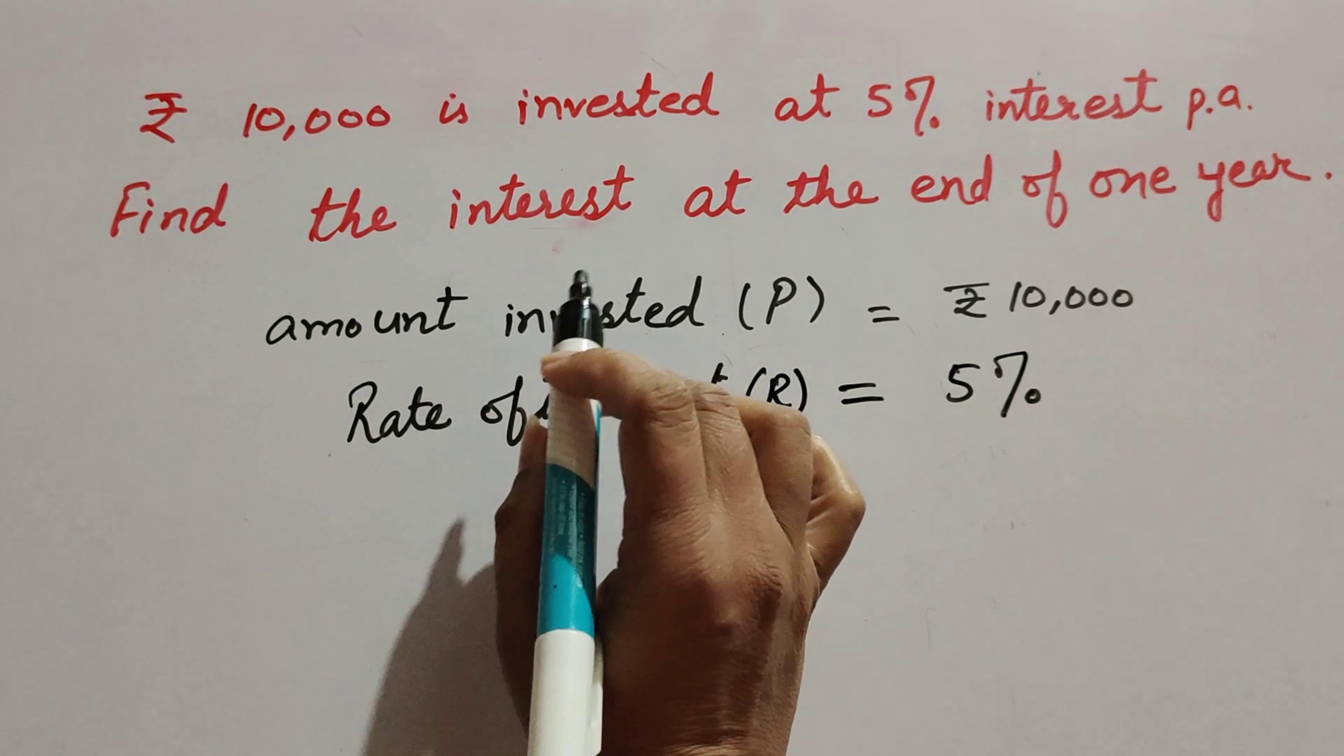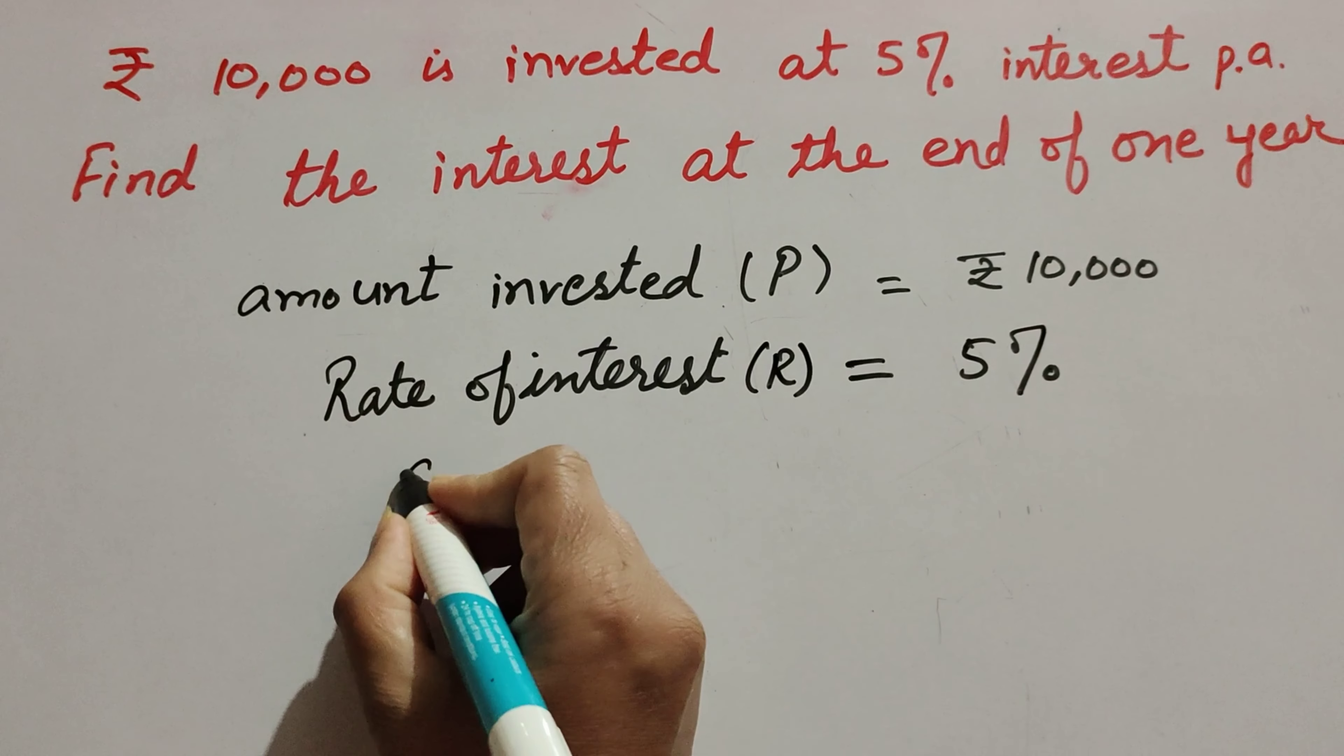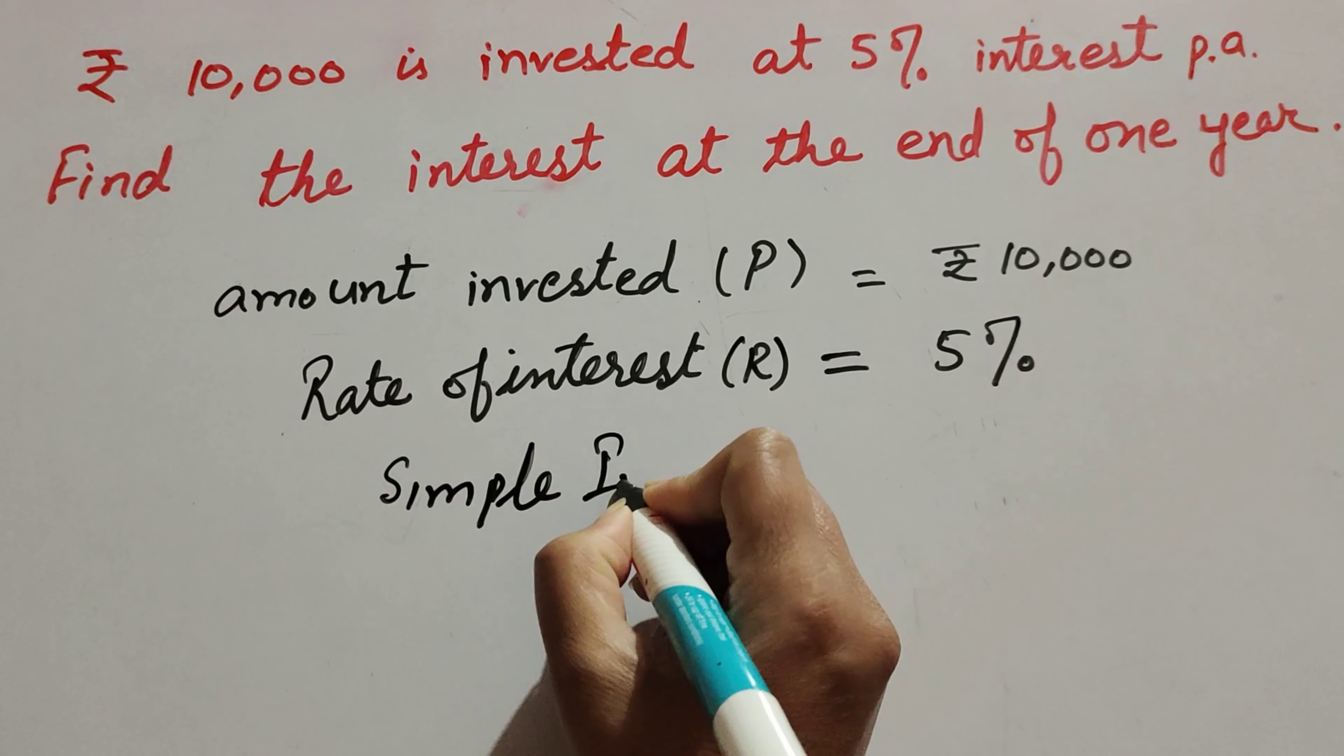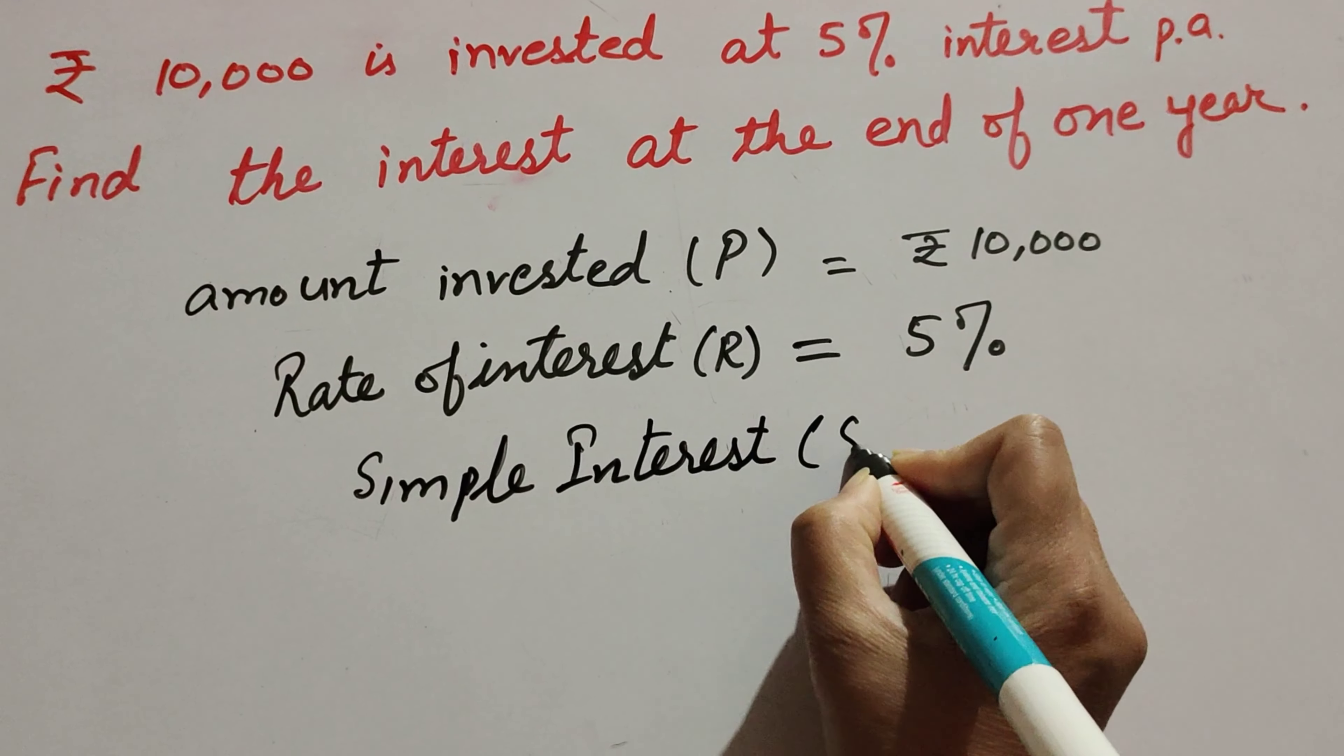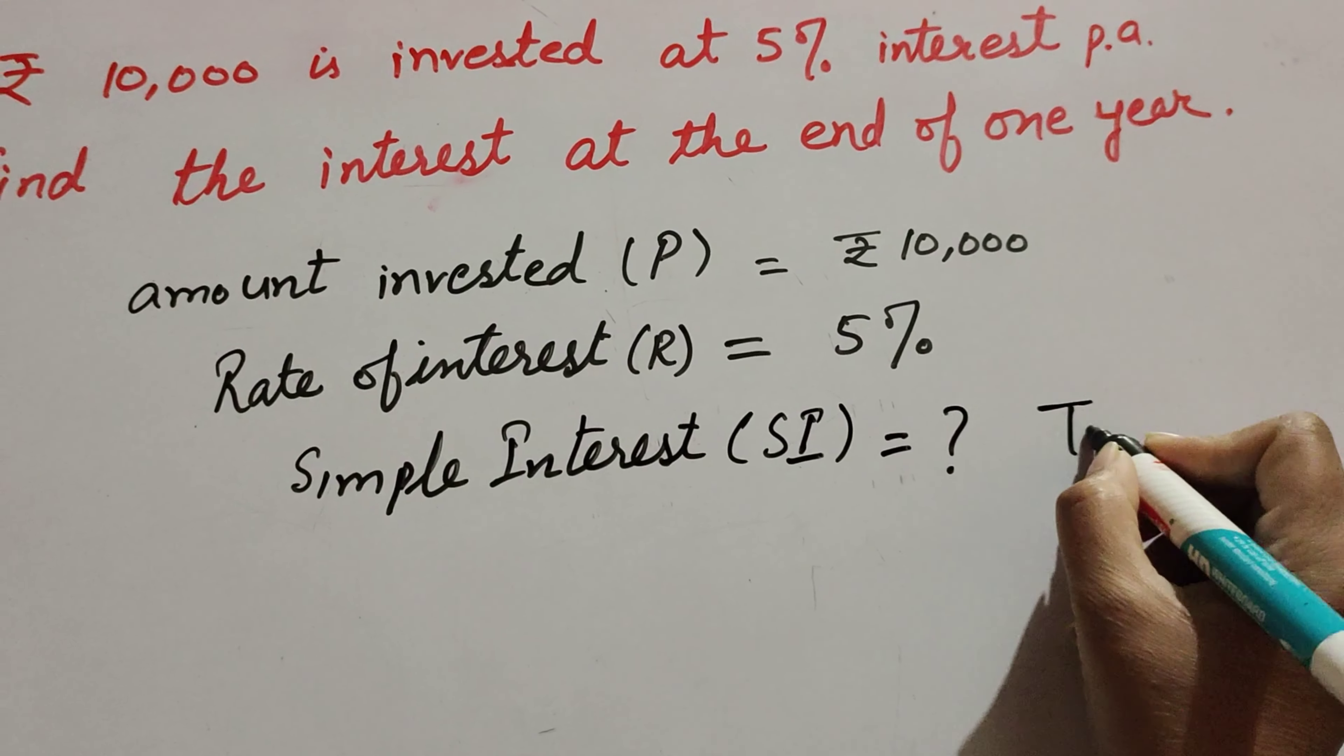We need to find the interest at the end of one year, so we find the simple interest. Simple interest, which we write as SI, is what we have to find. Time equals one year.